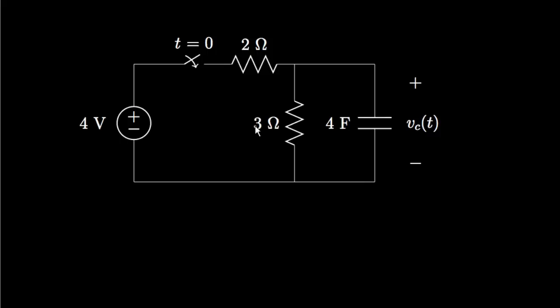Because of that, the voltages and currents in the circuit will react to our opening or closing of the switch by transitioning from one value to another with a mathematical form called an exponential decay. When trying to determine the various voltages or currents throughout the network, it's always best to begin by determining the voltage across the capacitor.